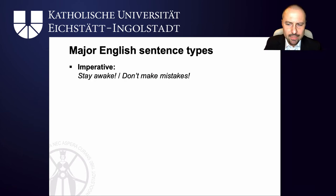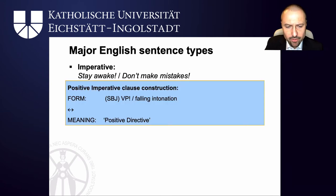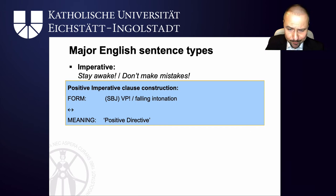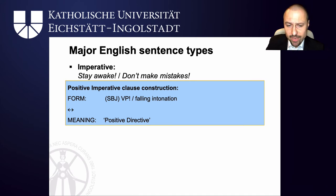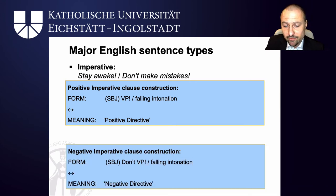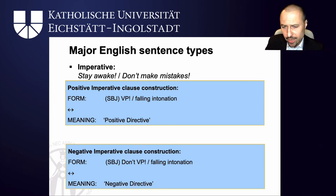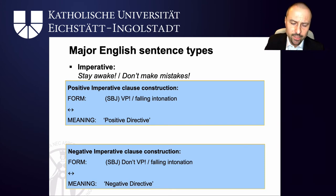Moving on to imperatives. You have positive imperatives like 'stay awake', or negative ones like 'don't make mistakes'. A positive imperative normally has no subject — which is why we can put it in parentheses — and just a verb phrase: 'stay awake', 'eat your beans', 'be happy'. They have a falling intonation, and the meaning is a positive directive. Negative imperatives always start with 'don't' — though 'you, don't make mistakes' is a rare sequence where the addressee is mentioned in a subject slot. Normally they start with 'don't', have falling intonation, and whatever follows is a negative directive.